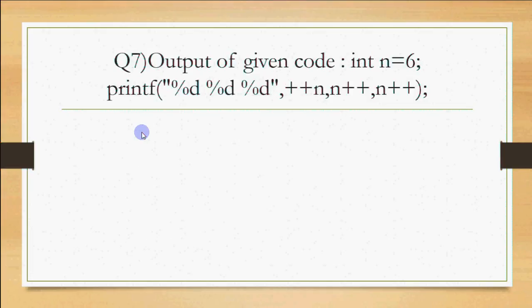Question 7: Output of the given code. int n equals 6, then we have printf with 3 percentage d: ++n, n++, n++. Many people make this mistake solving this, thinking the answer is 7, 7, 8. Why? Because ++n means pre-increment, so 6 becomes 7. Then post-increment, 7 prints but memory becomes 8. Then 8 prints but memory becomes 9. This is the quite obvious way we think about it.